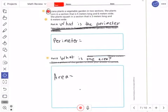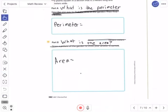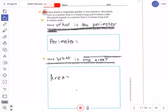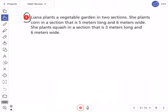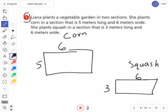Okay, so we are on page 382. We're going to talk about how to find the perimeter and area of these two different sections of garden. I'm starting with perimeter.